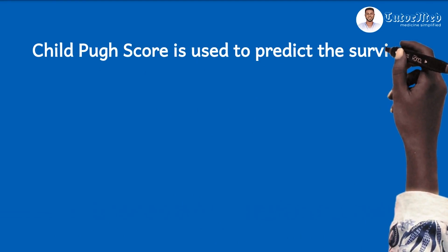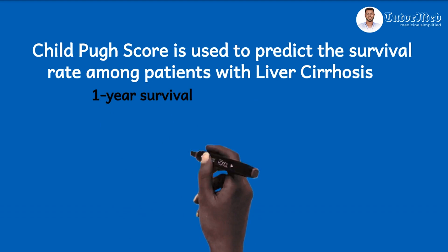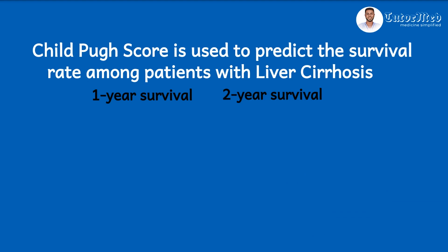The Child-Pugh score system is a system used to predict the survival rate among patients diagnosed with liver cirrhosis. When a patient is diagnosed with liver cirrhosis, we use the score to predict how long they would live — the survival rate for one year and for the next two years. Sometimes in exams we are asked about the Child-Pugh score and its components, and it is those components I want to provide a mnemonic for.